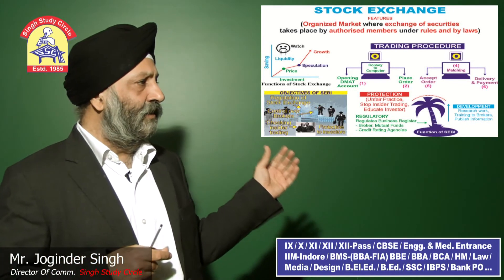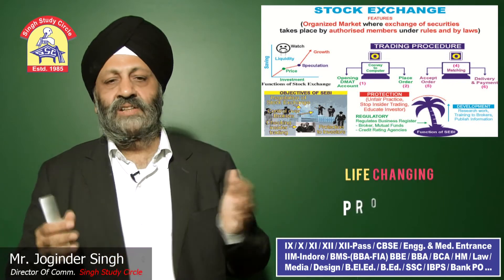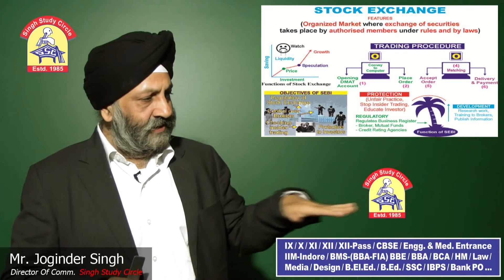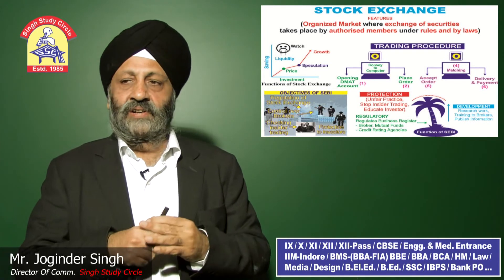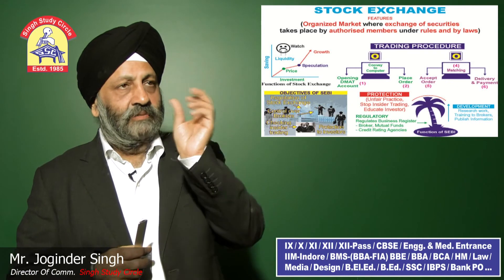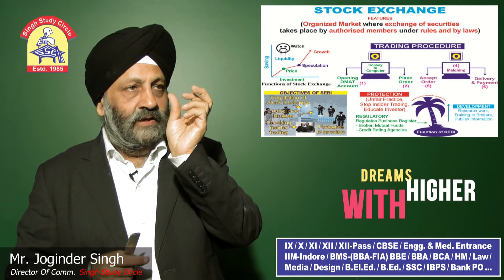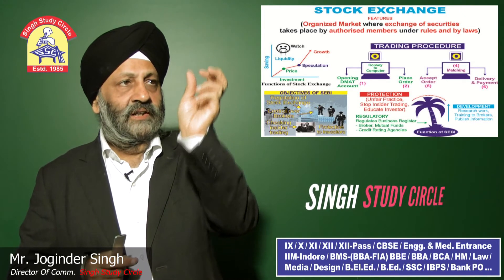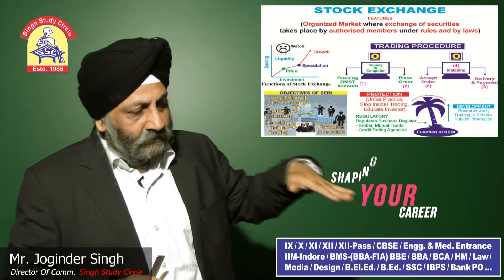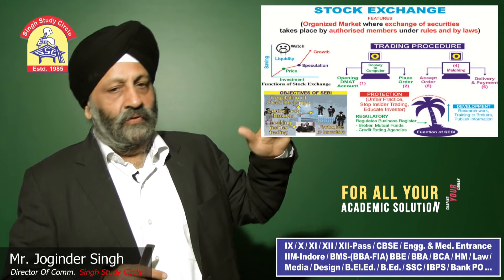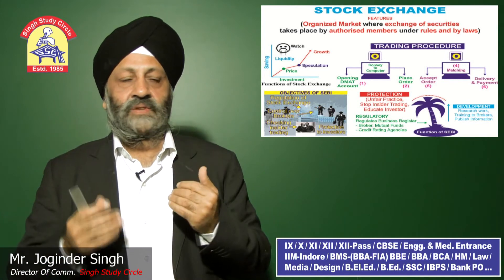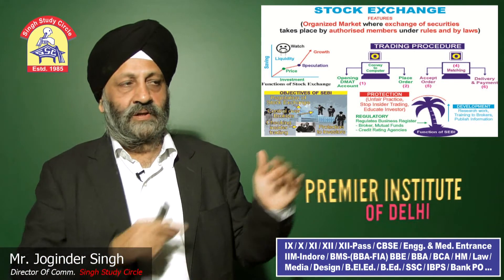To remember the functions of a stock exchange, a memory technique is used with a graph: on the vertical axis is 'savings' and on the horizontal is 'investments.' The seven functions are: mobilization of savings, channeling into investment, fixing of price, speculation, growth, maintaining watch, and liquidity.